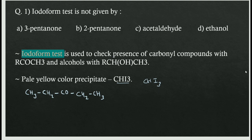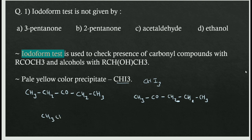Next, 2-pentanone has the structure CH3-CO-CH2-CH2-CH3. Acetaldehyde is CH3-CHO. The last option, ethanol, is CH3-CH2-OH. From these four options, the structure which does not have RCOCH3 or RCHOHCH3 is the first option.